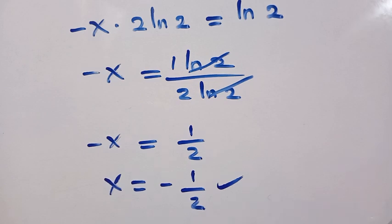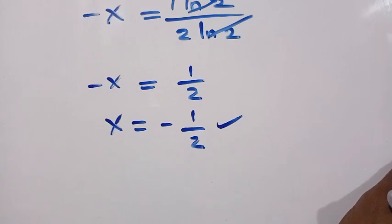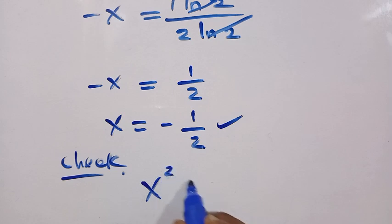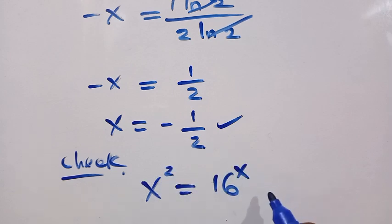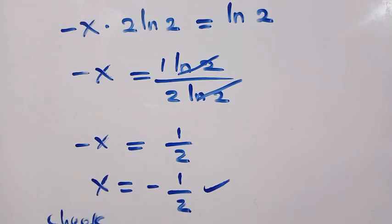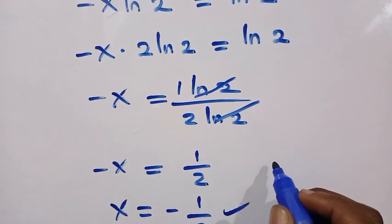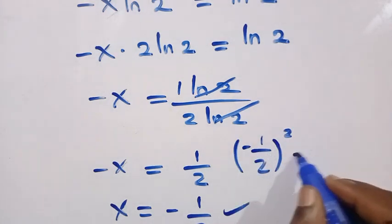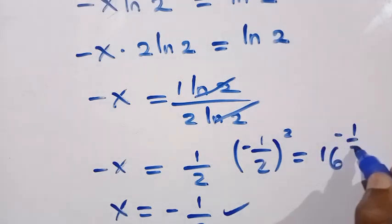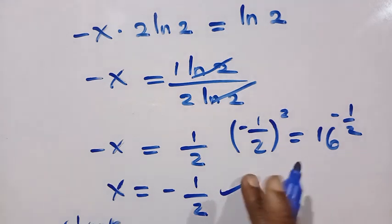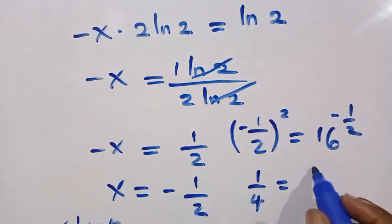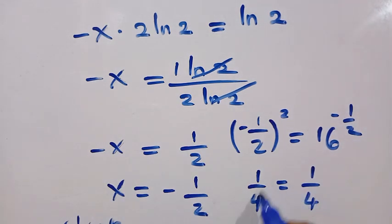We can verify this by substituting x = minus 1/2 back into the original equation x² = 16^x. We get (minus 1/2)² = 16^(−1/2). The left side gives 1/4, and the right side also gives 1/4. Since 1/4 equals 1/4, this confirms that x equals minus 1/2 satisfies the equation.